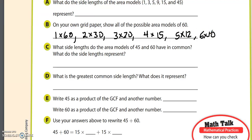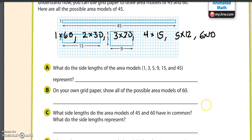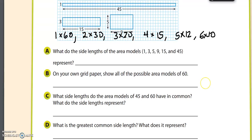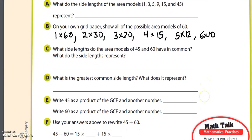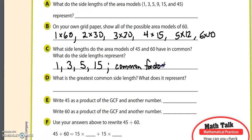Question C reads: what side lengths do the area models of 45 and 60 have in common, and what do the side lengths represent? Looking at which numbers appear in the 45 models as well — 1 does, 3 does, 2 doesn't because there's no 2 in the 45s, but 5 does and 15 does. Those side lengths are the common factors of 45 and 60.